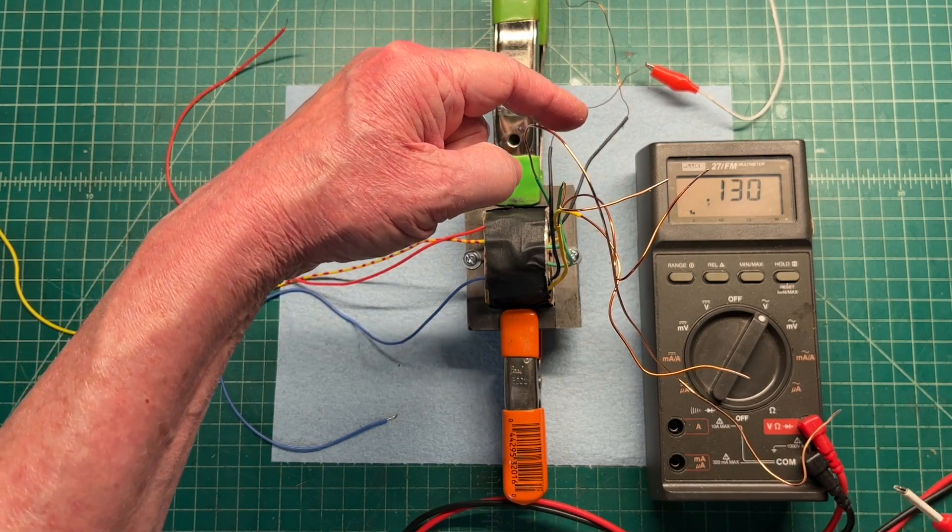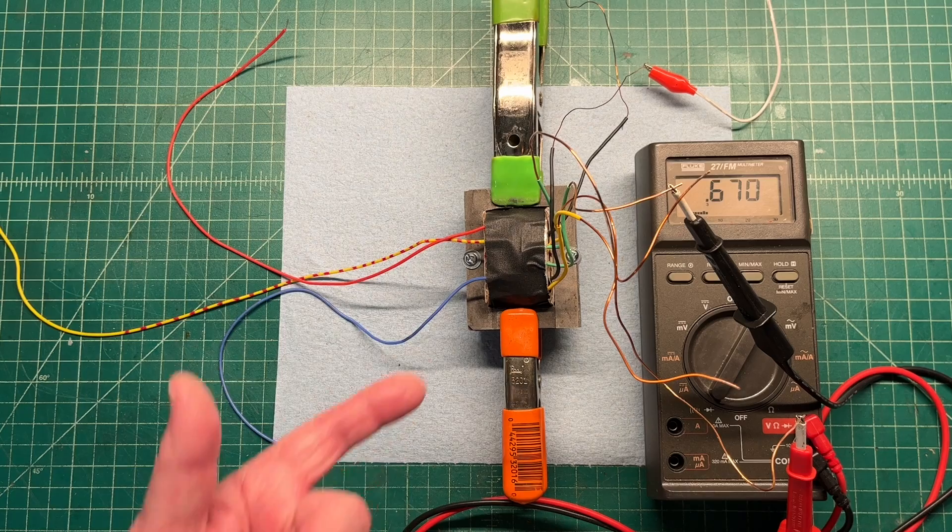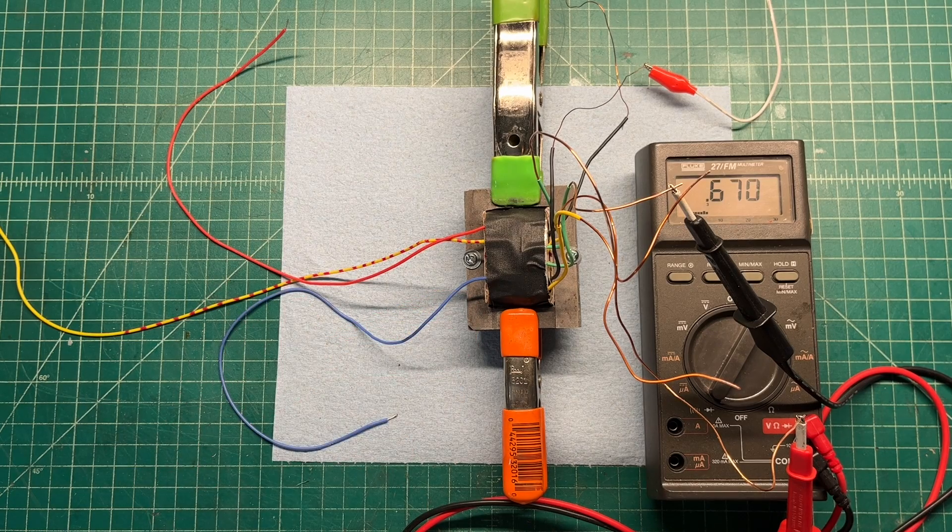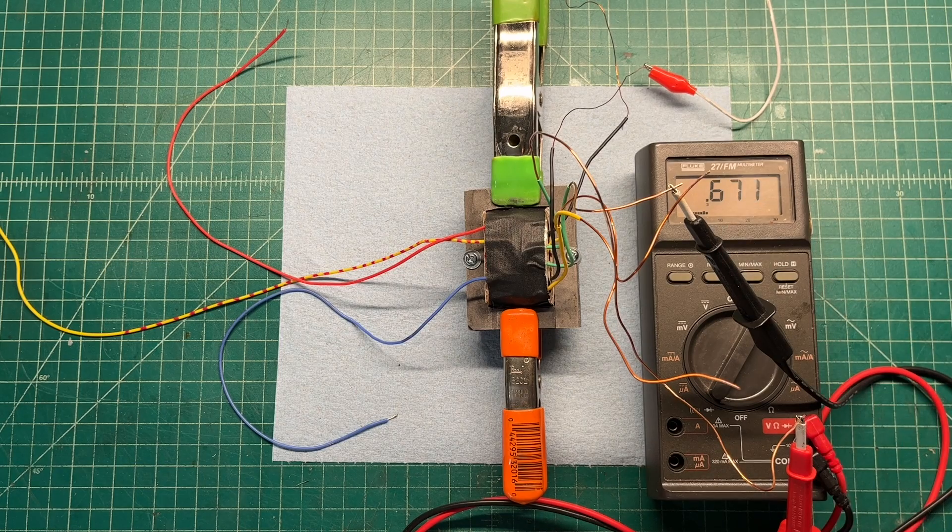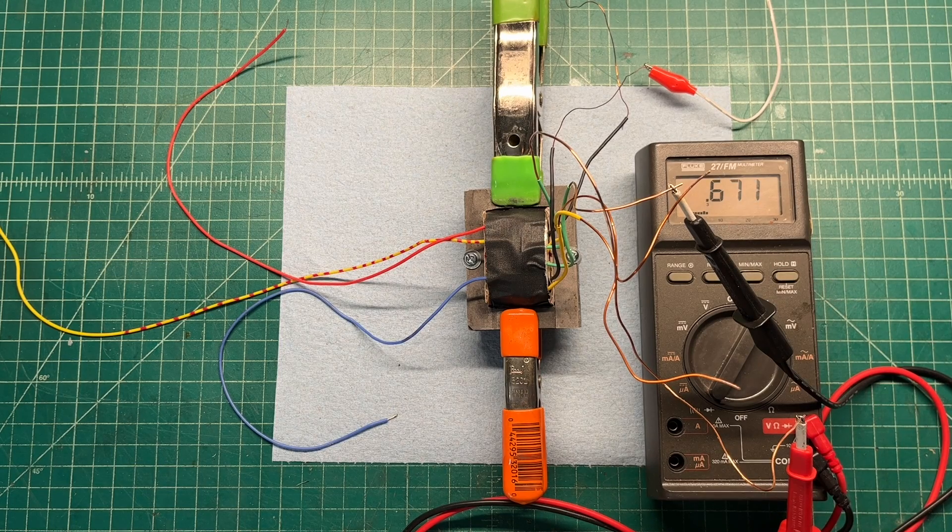Let me just start here with this winding. The green is the 6.3 volt winding. So for reference, again, 0.671.